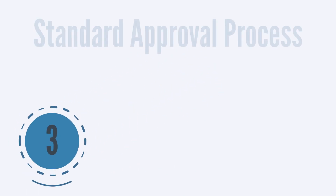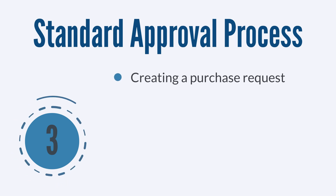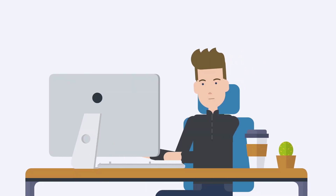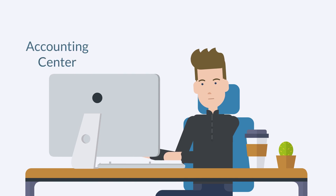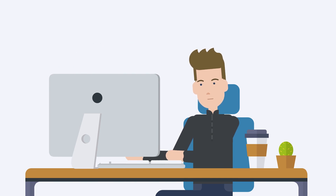So what is the standard approval process that purchase requests go through on their path to becoming purchase orders? To begin with, let's look at who can create a purchase request in the first place. Employees who have access to the employee center can create purchase requests. These employees may also have access to other centers through other roles that their jobs require, but when they need to create a new purchase request, they would log into the employee center role.